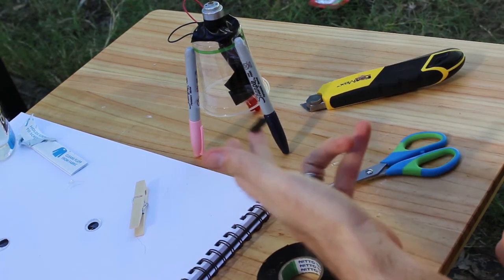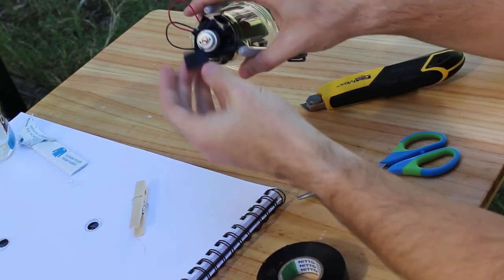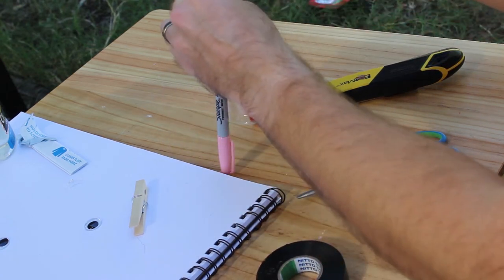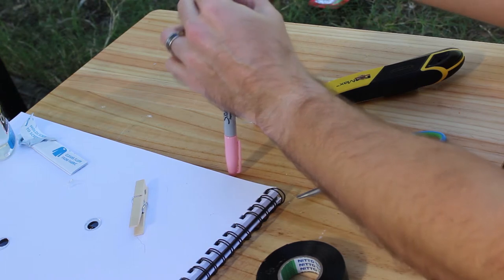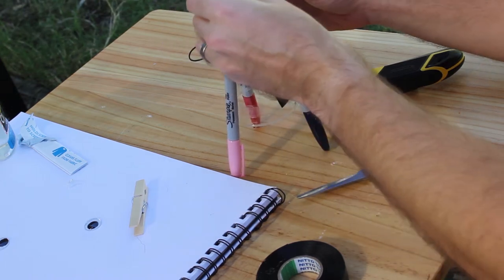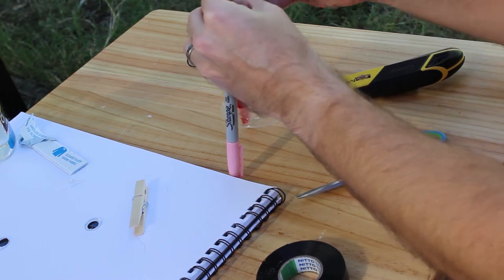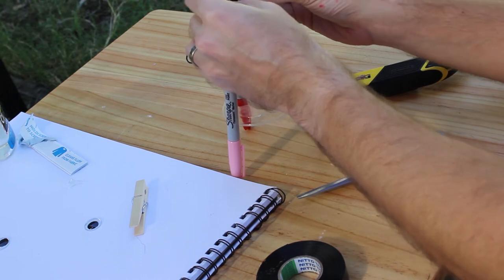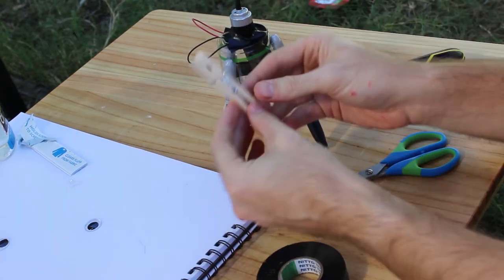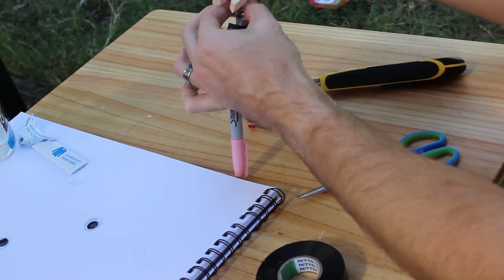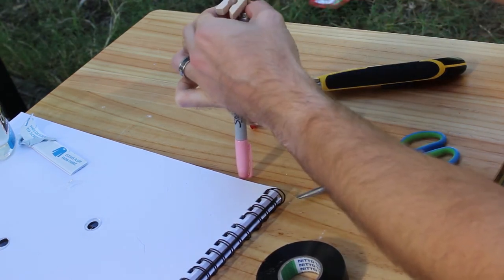Now you just want to get a small piece of tape, put it around the top here, sticky side out. Now we are doing this so we can fit on a peg. Peg is going to go on the top and it's going to give us our wobble.